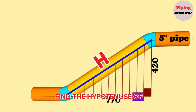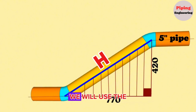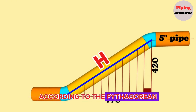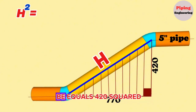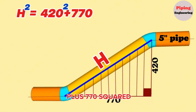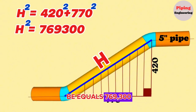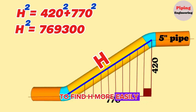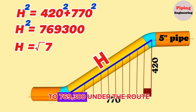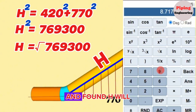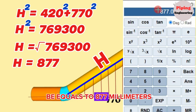Now let's begin to find the hypotenuse of the vertical right angle triangle. We will use the Pythagorean theorem formula to calculate the hypotenuse. According to the Pythagorean theorem, H squared equals 420 squared plus 770 squared. Continuing to calculate, H squared equals 769,300. Therefore H equals the square root of 769,300. Using a scientific or phone calculator, we find H equals 877 mm.